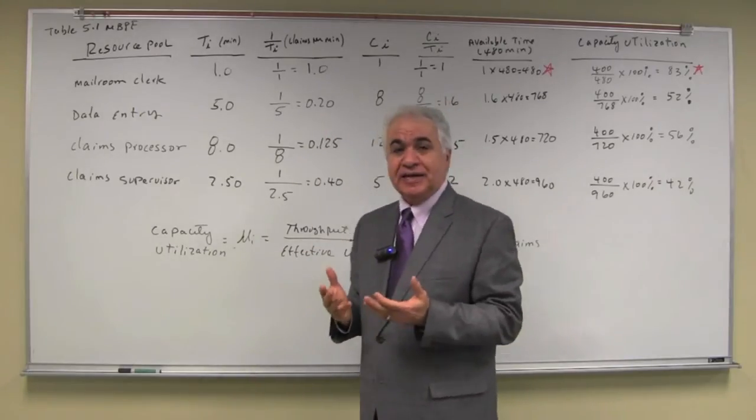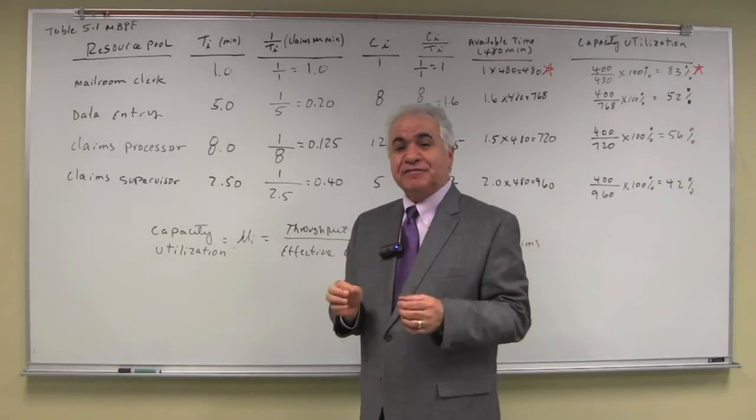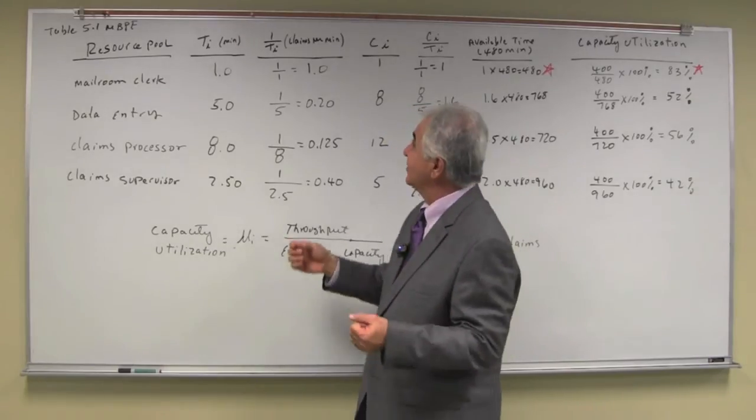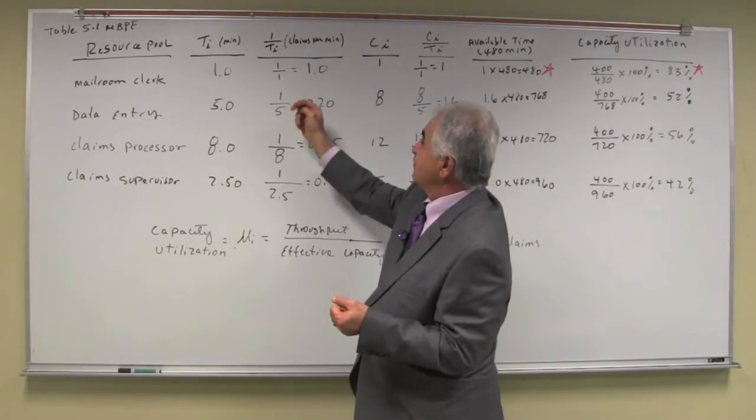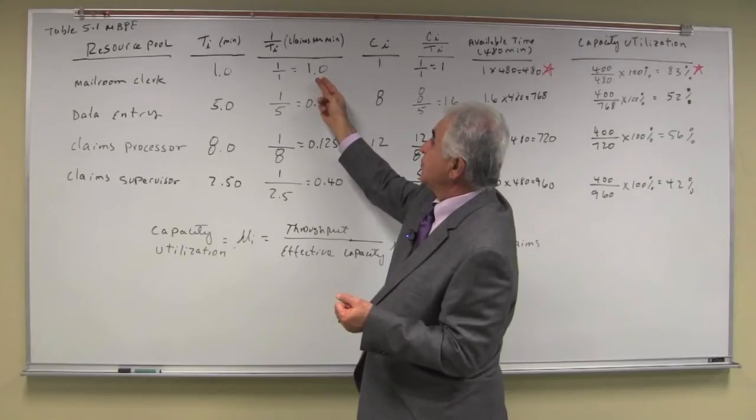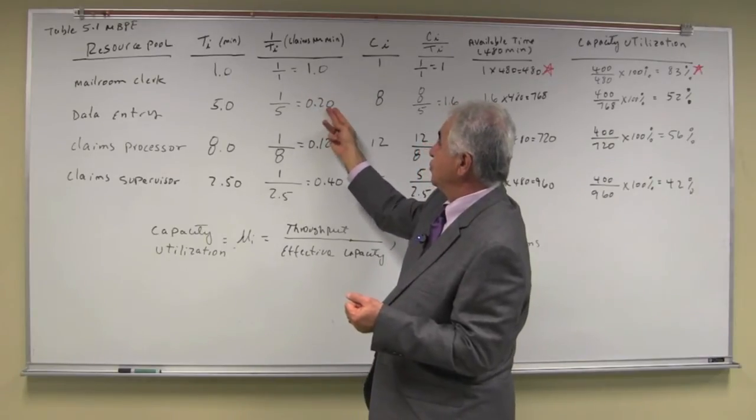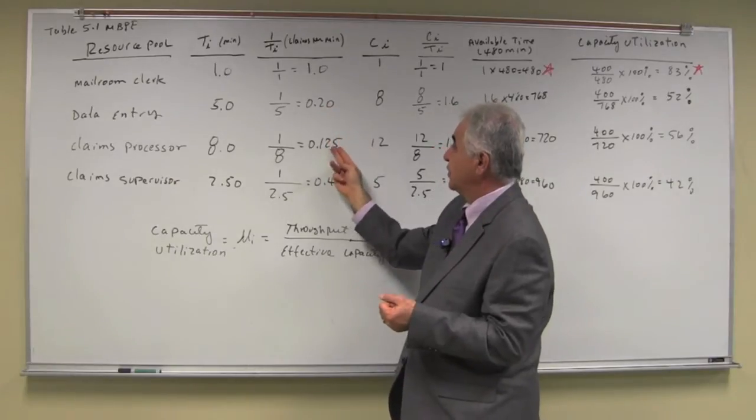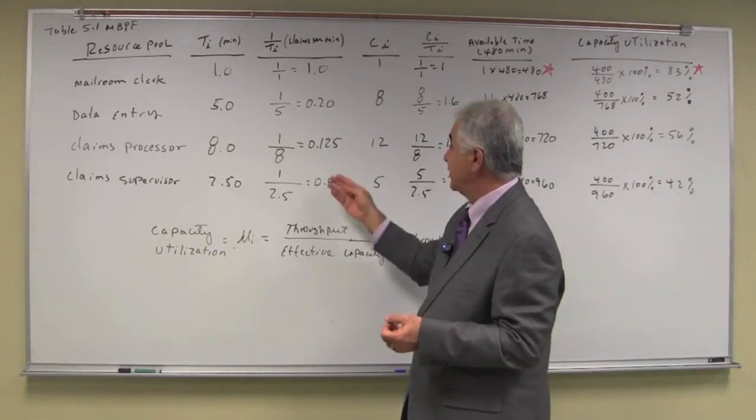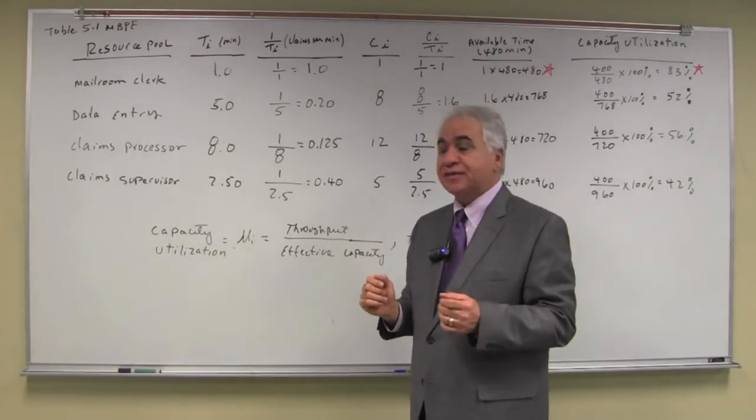From there we can determine and estimate the effective capacity of a resource unit, one over t-i. So one mayor and clerk processes one claim per minute, 0.2 per minute, 0.125 claims per minute and 0.40 claims per minute.